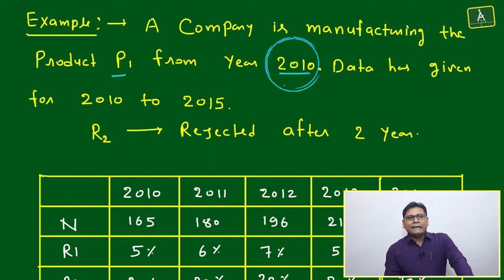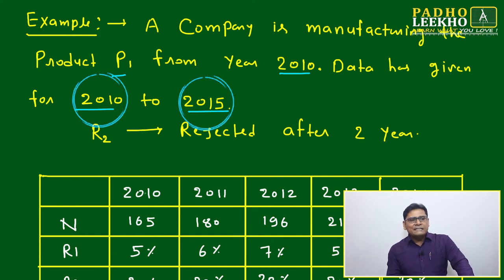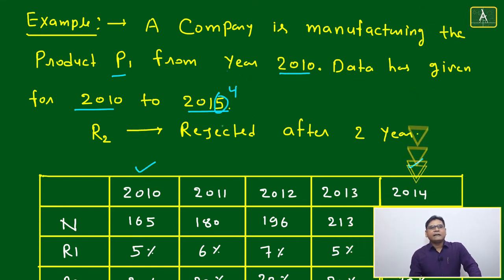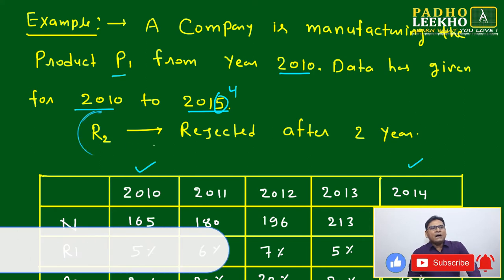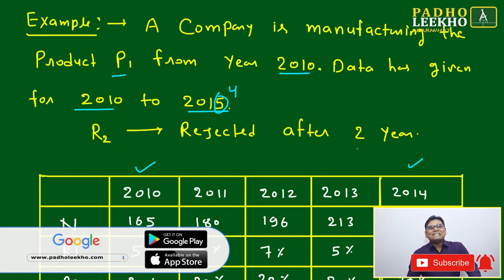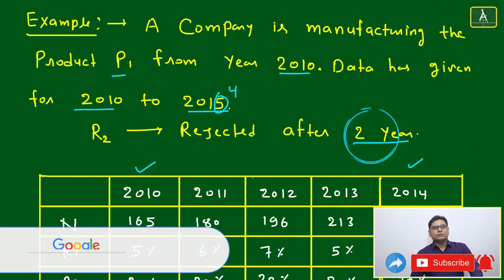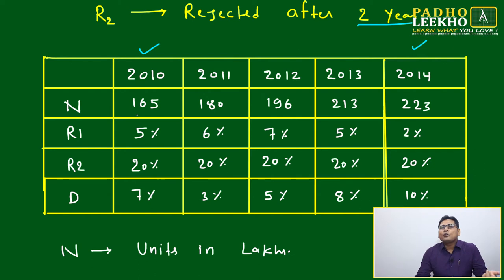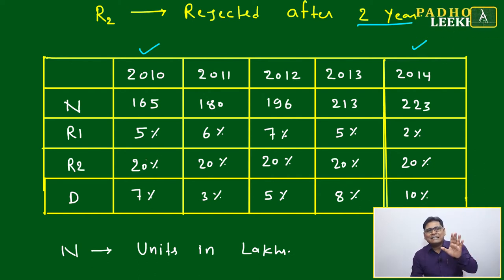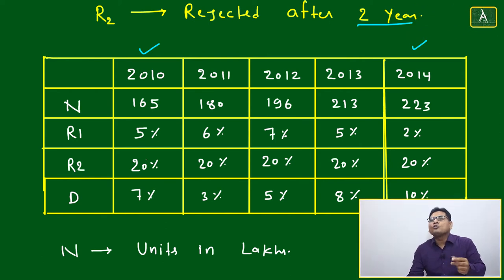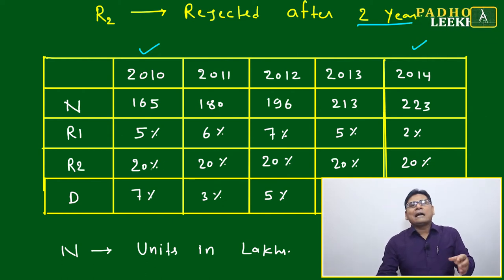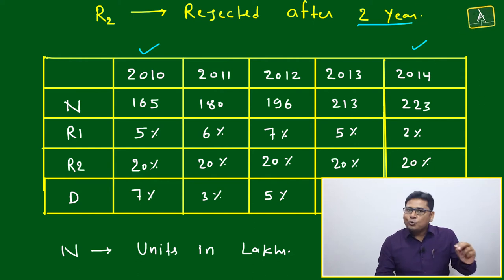A company is manufacturing product P1 from the year 2010. Data is given for 2010 to 2014. One table is given where R2 — percentage of units rejected after two years — is one of the variables. This is a simple example; don't expect this to be a replica of a CAT problem. After discussing this question I will explain how to fine-tune it into a more complex, CAT-level caselet.